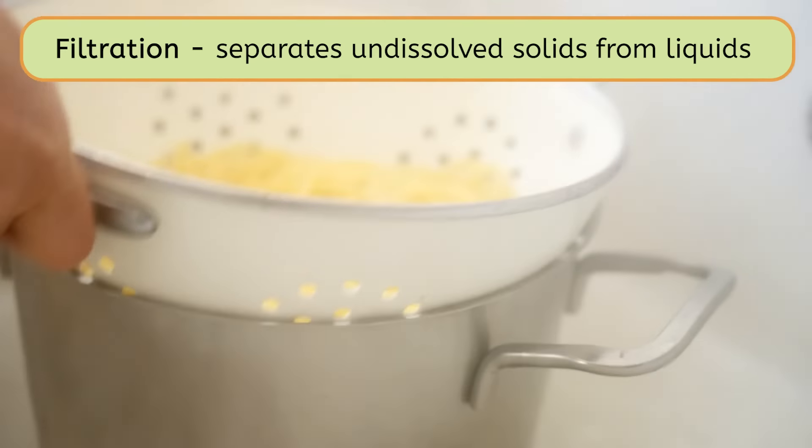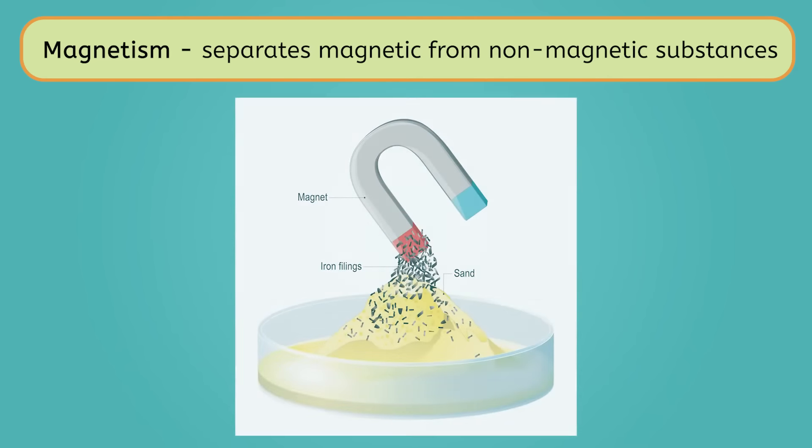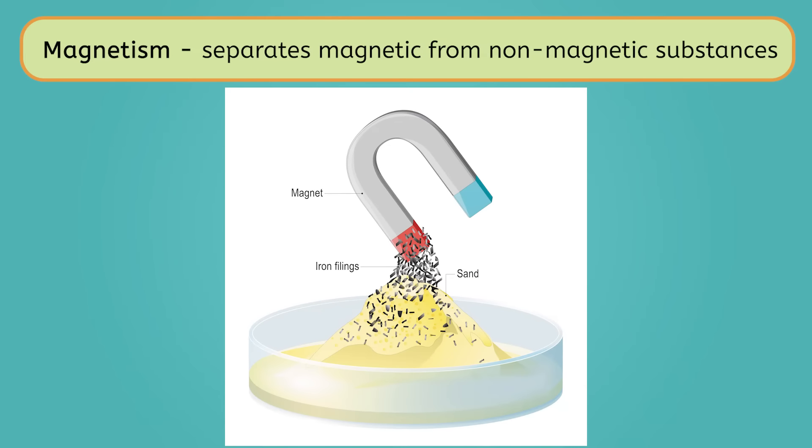We can also use physical properties like magnetism to separate mixtures. For example, how do you think we could separate a mixture of sand and iron filings? Sure, we could use a magnet to attract all the little bits of iron, leaving the sand behind.